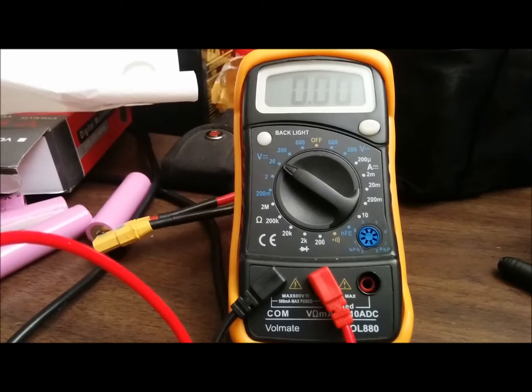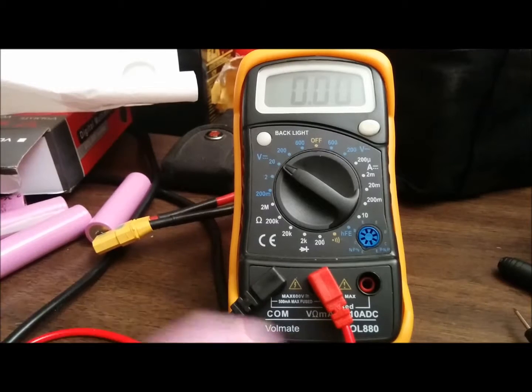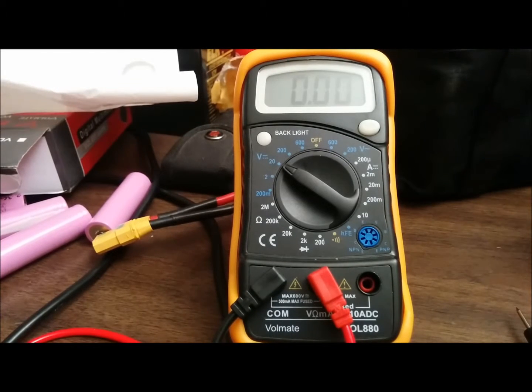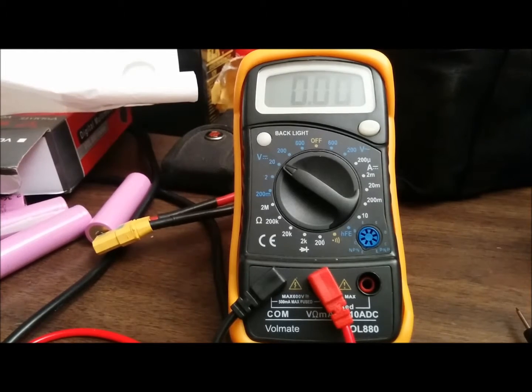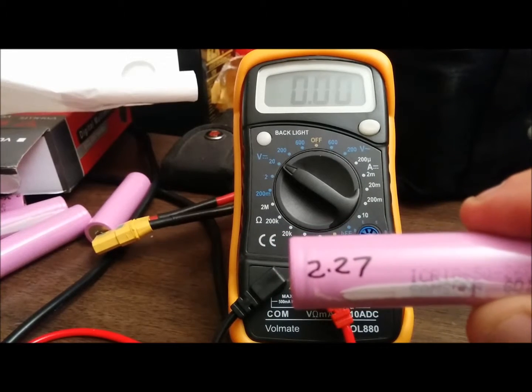So I'm going to put the probes, one on the positive, one on the negative. And this one looks like about 2.27 as well. That's surprising because I have a whole bunch of those 2.27s, low voltages. So here we go, 2.27.